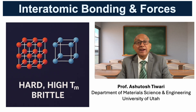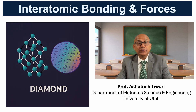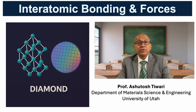These compounds tend to be hard and have high melting points but are brittle. Second, covalent bonds — here atoms share electrons to fill their valence shells. These bonds are directional and extremely strong, producing rigid structures like diamond, silicon and germanium.